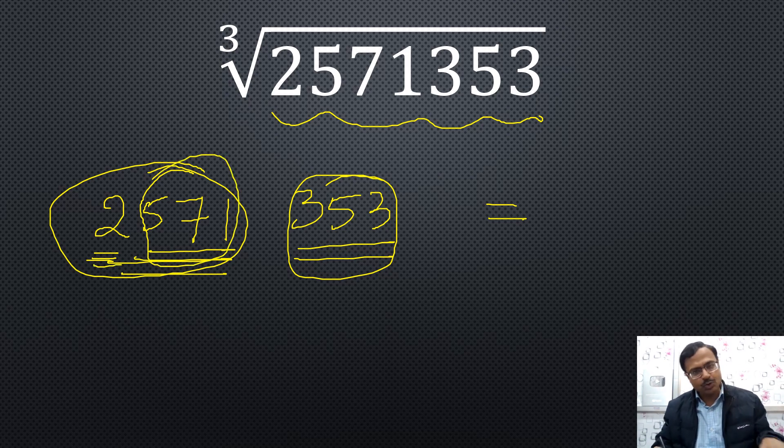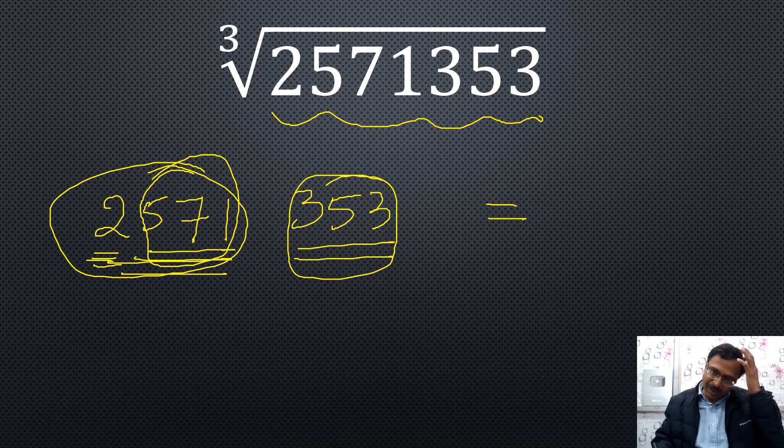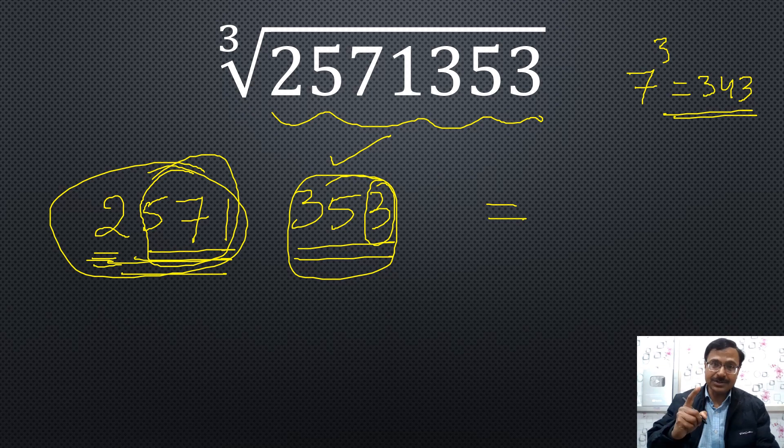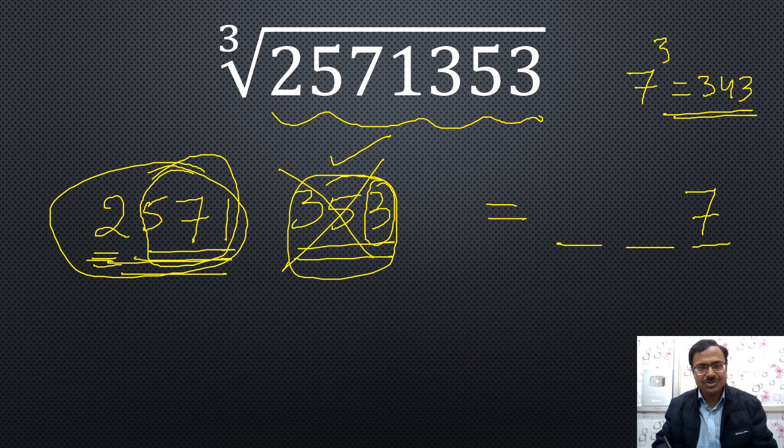How do I interpret the last three digits? Look at the unit digit of this triplet, 3. There's only one single digit whose cube ends in 3, and that's 7. 7 cube is 343. Apart from 3, there is no other single digit whose cube ends in 3. Therefore, the unit digit of my answer is 7. Work done for this triplet. Now I have to just consider 2571.